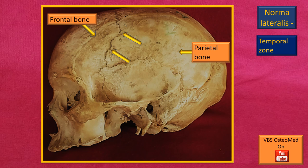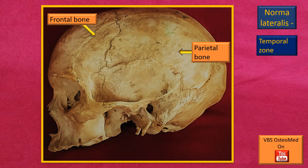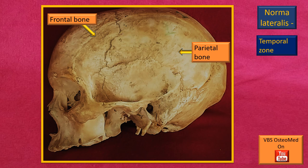We have already identified the frontal bone in the previous video. A recap: the frontal bone is seen there in the upper part. On the other side is the parietal bone. Between the two is the coronal suture, as seen by those flashing arrows — the frontoparietal or coronal suture is very clearly seen in the upper part of norma lateralis. It is one of the key features of this zone.